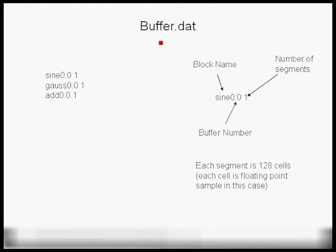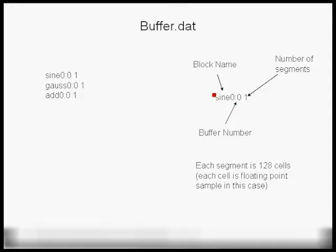During each simulation, CAPSIM produces a file called buffer.dat. You can examine this file to see what's happening with the buffers in a CAPSIM topology during simulations. In this case with three blocks — the sine wave generator, the Gauss generator, the add block, and the plot block — the sine wave generator created one allocation of 128 cells on its output buffer, and similarly the Gauss block created one segment of 128 cells. The legend shows: block name, port number, and number of segments allocated on the buffer for that port.